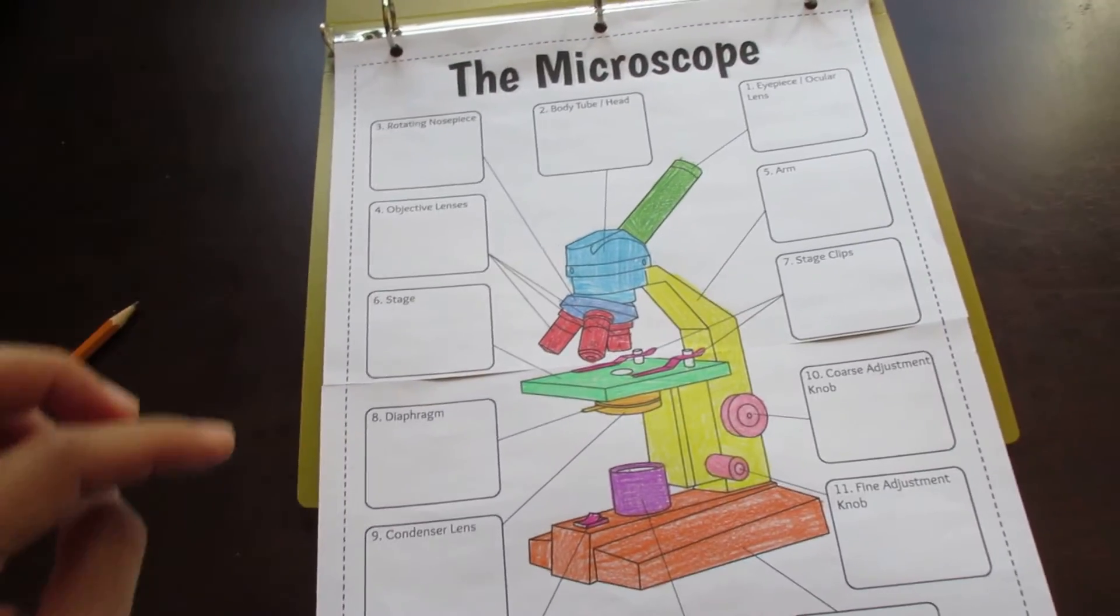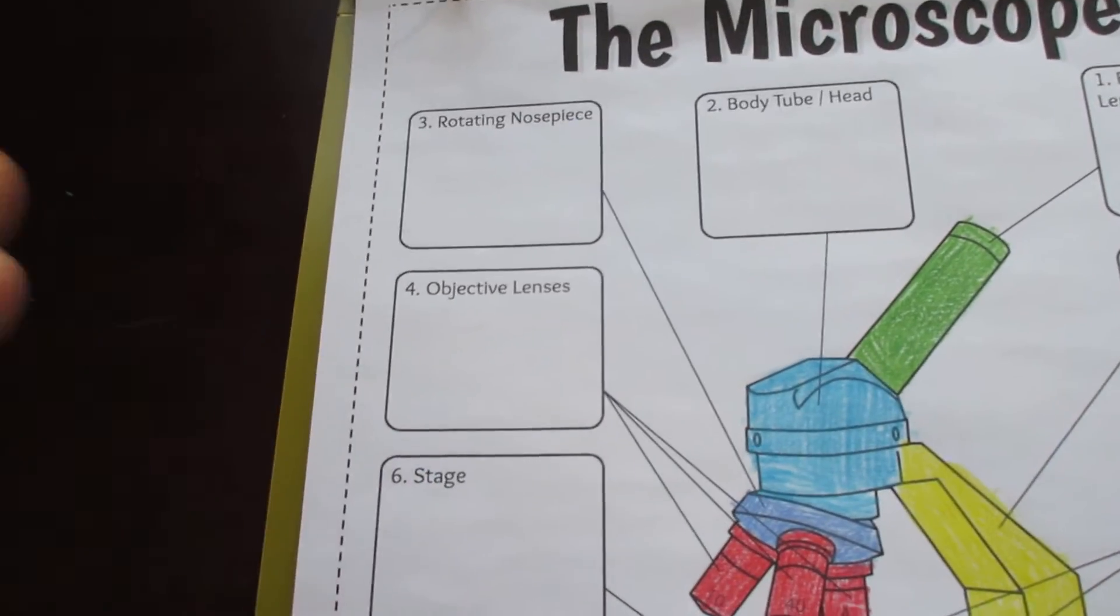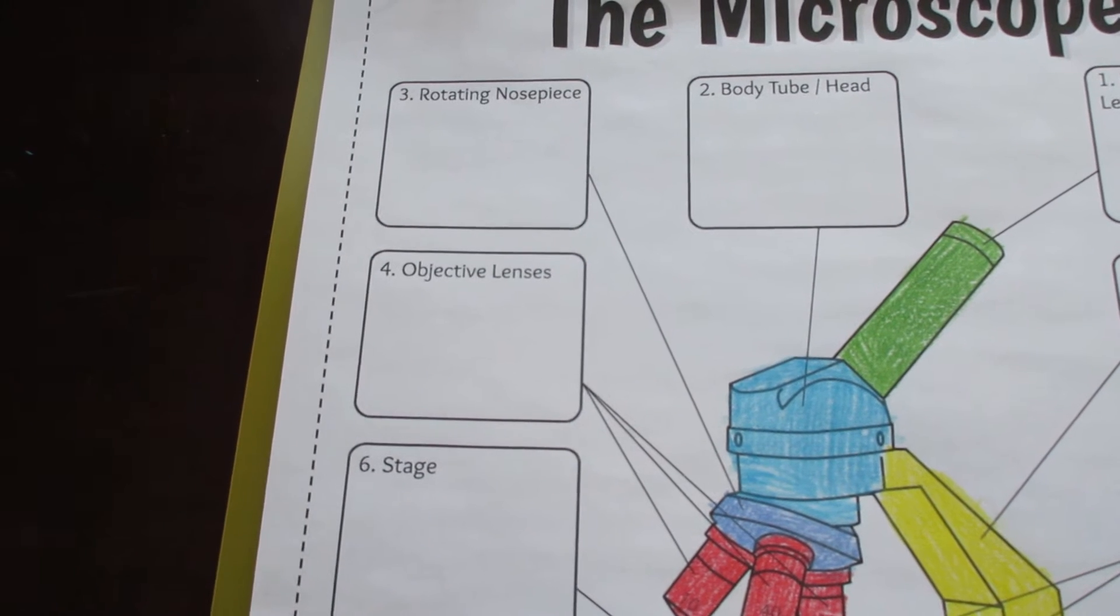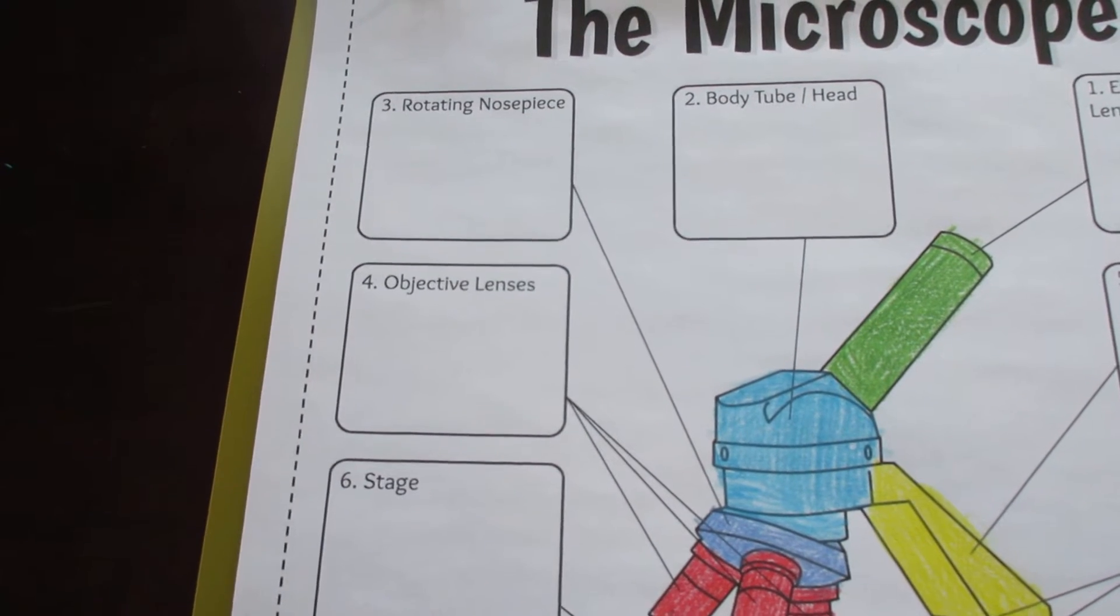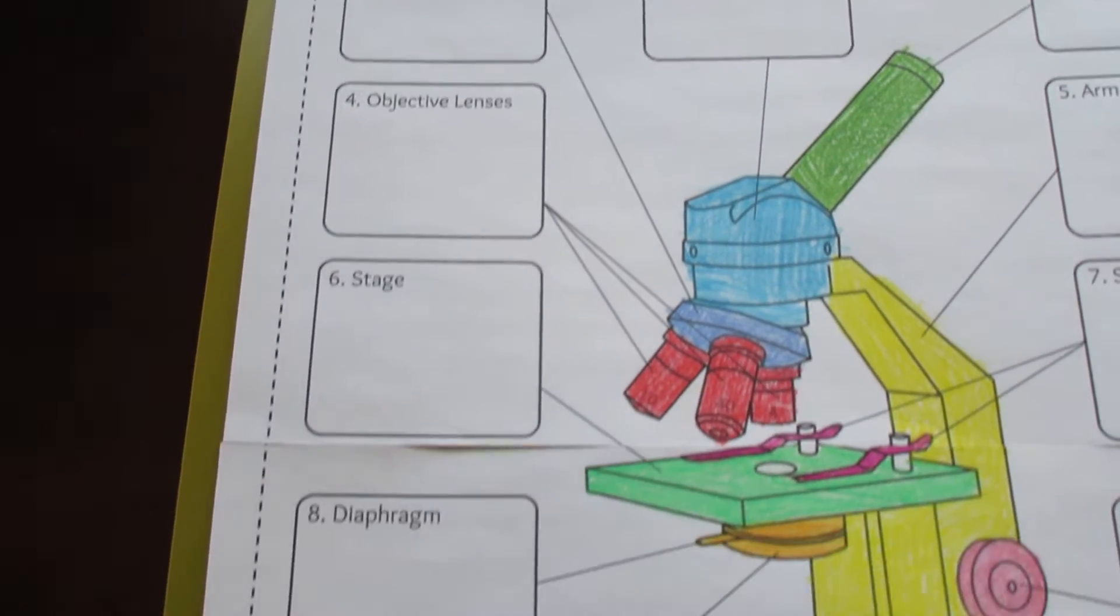Number one, number two, number three. Each structure connects to a numbered description box and labels are also provided. This allows you to go step by step through the lesson and reference each number or label as you go along so that students can always find their place.